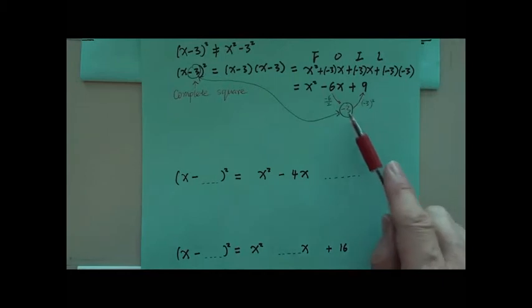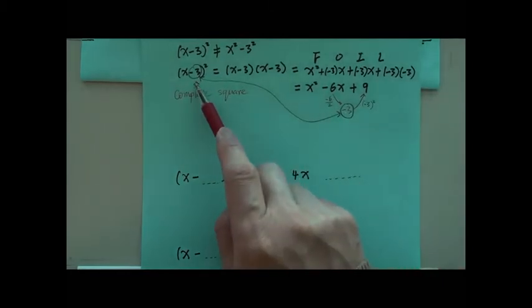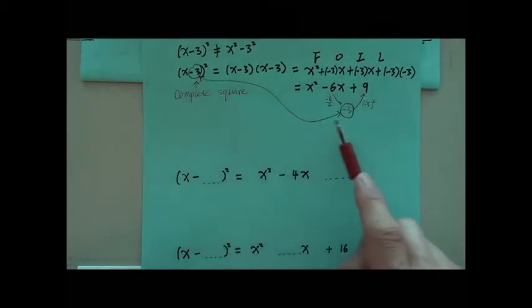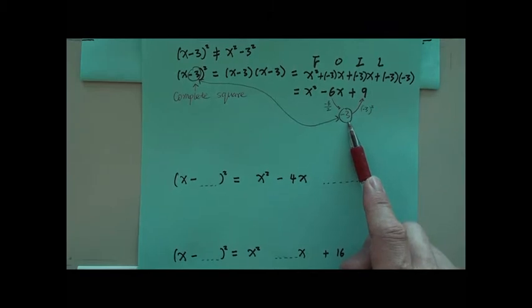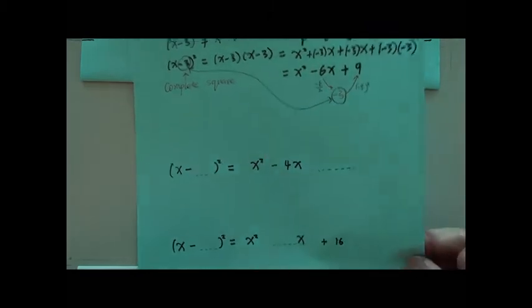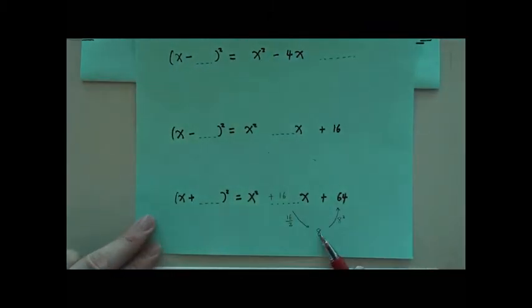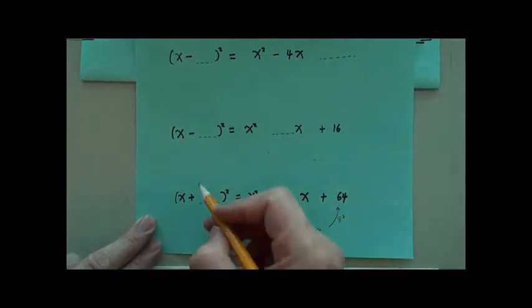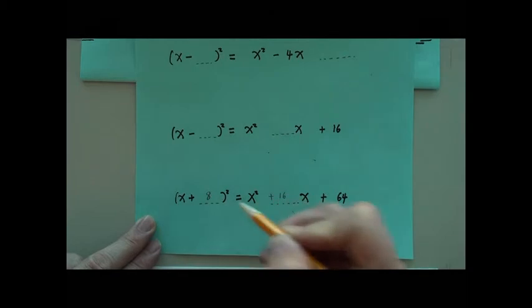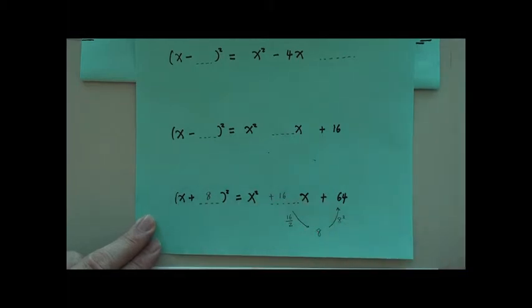Look. The number here is the number you needed. Negative 3. So here, this is the number you should put right here. So the missing one is 8.